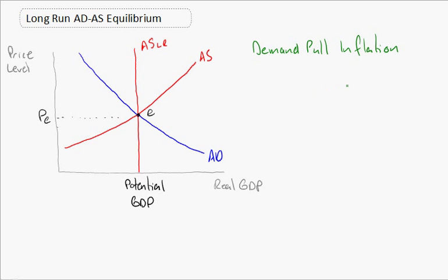Now let's look at what happens with demand-pull inflation. Demand-pull inflation is inflation that occurs when the aggregate demand curve shifts to the right for some reason. Suppose that people believe the economy is going to pick up, so they start spending more, shifting the aggregate demand curve to the right. In the short run, while wages are fixed, we get a new equilibrium at point C, where the price level has gone up to PC and real GDP has increased to GDP C.